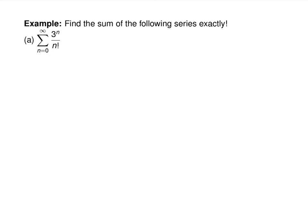A neat application is that we can find some series sums exactly by recognizing them as Maclaurin series with specific values of x plugged in. If you see something over n factorial and something to the n, that looks a lot like the sum from n equals 0 to infinity of x to the n over n factorial, which equals e to the x — just with x equals 3 plugged in. So that series equals e to the third.